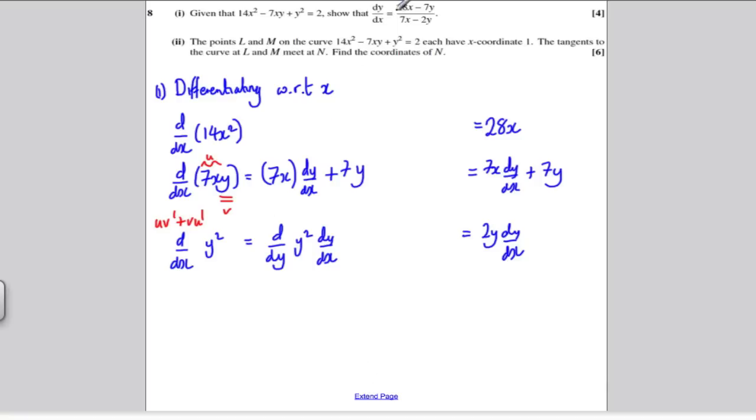Let's combine everything then. The differential of 2 is 0. So if I combine all this, the differential was 28x. Then I was subtracting the differential of this, so I subtract 7x dy/dx and also subtract 7y. Then I'm going to add the differential of y² which was 2y dy/dx. And that is all equal to 0.